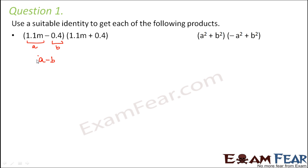We know that (a - b)(a + b) is equal to a² - b². Therefore, this is equal to a², that is (1.1m)², minus b², that is (0.4)².